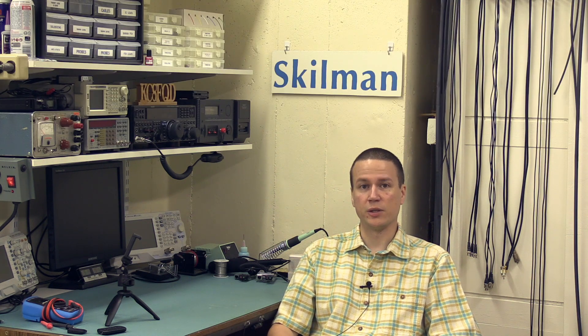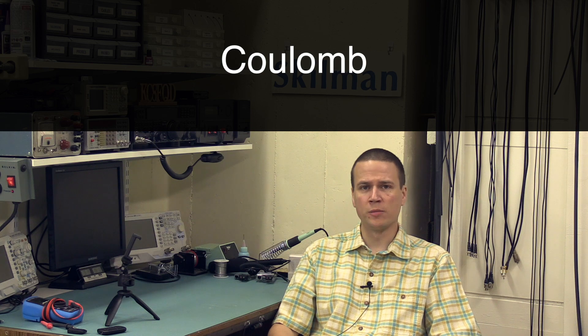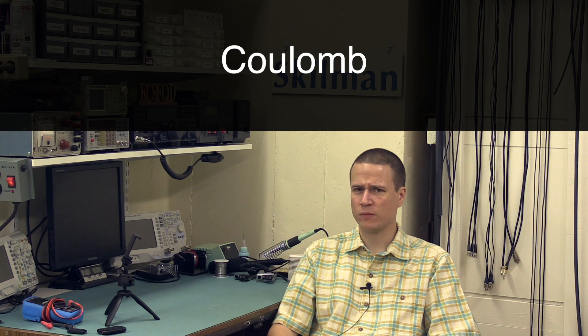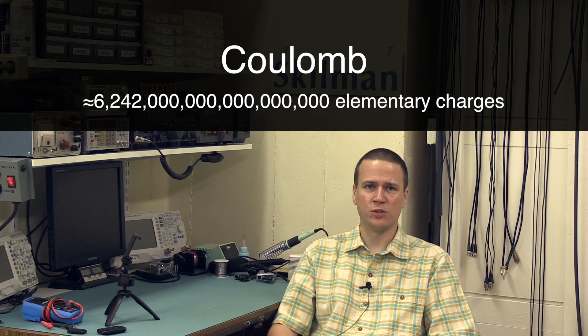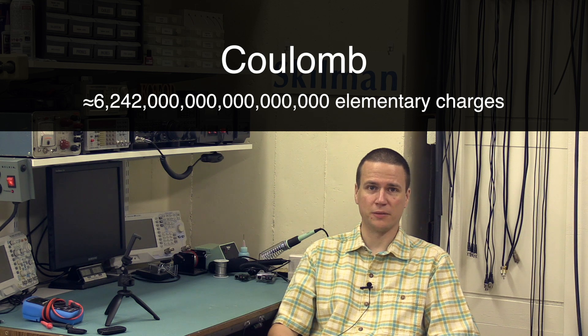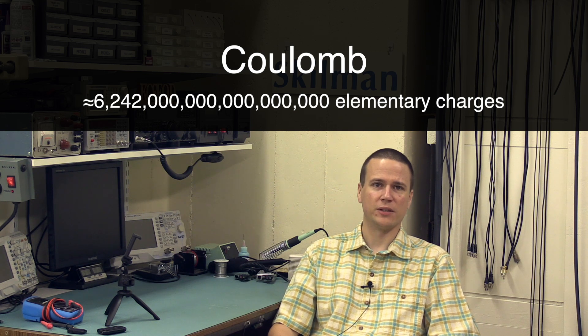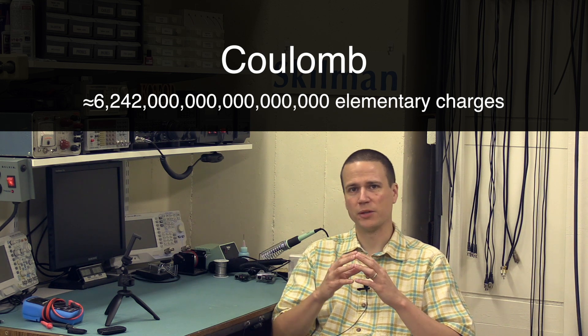So, we usually talk about charge in a unit called the coulomb. A coulomb of charge is about six million trillion elementary charges. It's a much handier unit to talk about a bunch of tiny elementary charges.